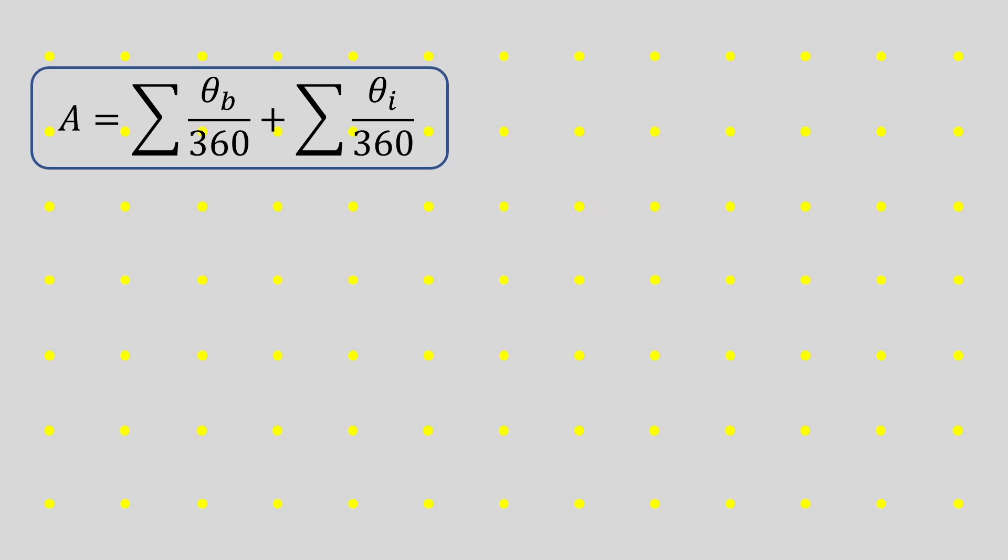Now we need to see what happens when we include an interior point. To do this, we'll join four squares together. We now have four vertex angles, each 90 degrees like before, four non-vertex angles, each equal to 180, and one interior point.